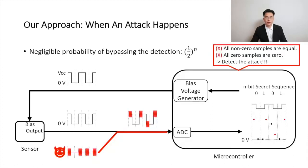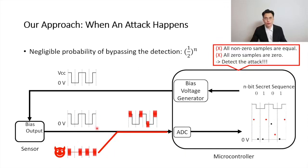Before showing an example of an attack, let's first have a look at what the attacker can do. We suppose that the attacker cannot access the sensor system physically, but she can remotely inject a crafted signal into the sensor system. Also, we assume that the attacker has no information about the n-bit secret sequence, and thus she does not know whether the voltage level of the sensor output transitions from high to low or the other way around. Moreover, the attacker knows when the sensor starts and stops transmitting the sensor output, and hence she can align the crafted signal with the sensor output precisely. To avoid violating those two requirements, the attacker must change all non-zero samples to the same voltage level, and the attacker cannot touch any zero sample, but she has to make a guess in each clock cycle.